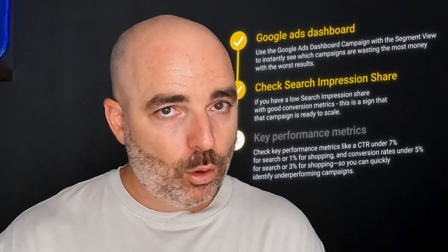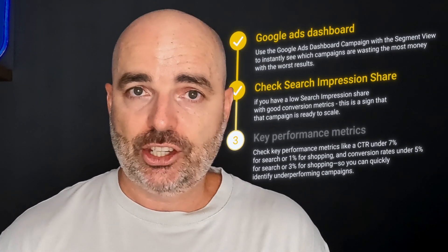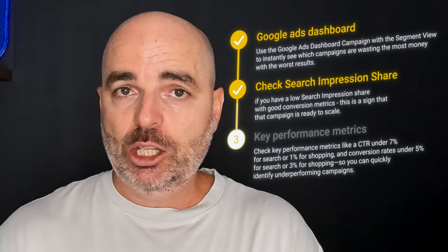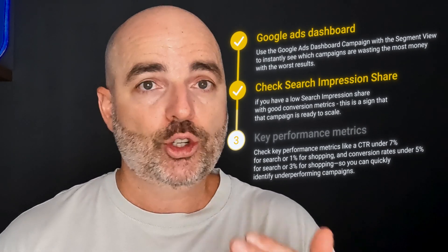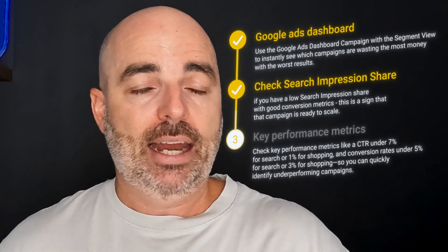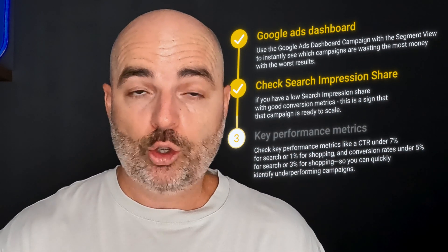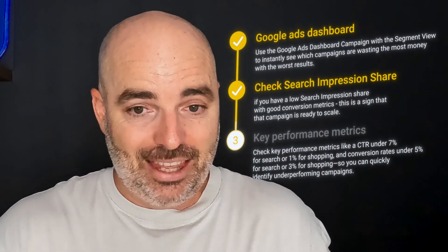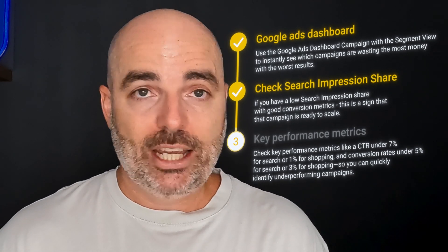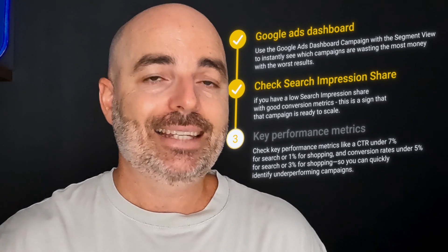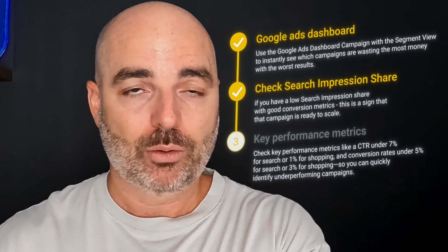When we're in the campaign view, we also want to add in the search impression share or click share metrics. If we're seeing campaigns — especially search or shopping campaigns — that have really good conversion performance and a low search impression share or click share, there are some really easy wins. One of the easiest ways to increase performance is by spending more money where we're getting better results.